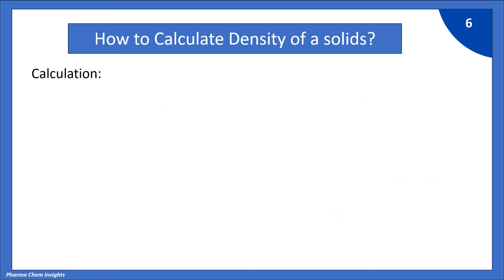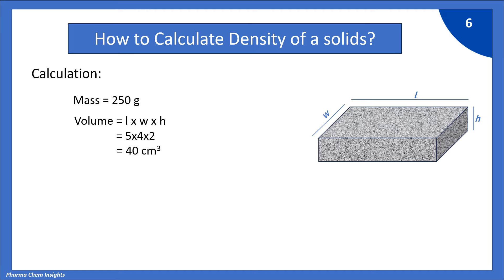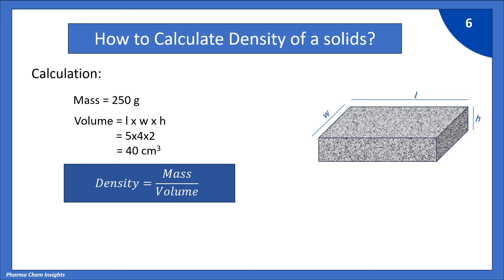Now, let us see the calculation. Mass of block is 250 g. Volume of block is length x width x height. That is 5 into 4 into 2 is 40 cm cube. So, according to formula, density is equal to mass divided by volume.